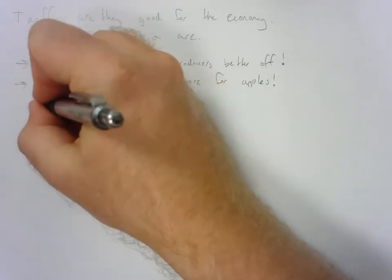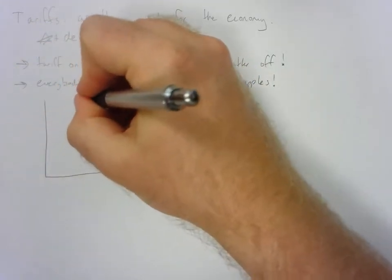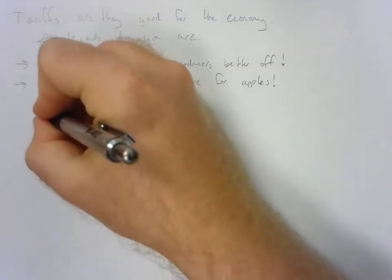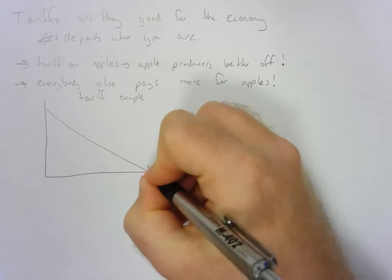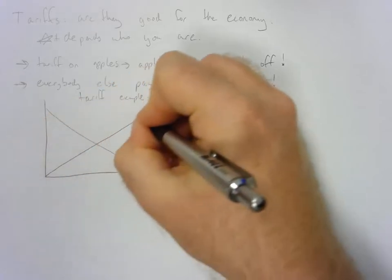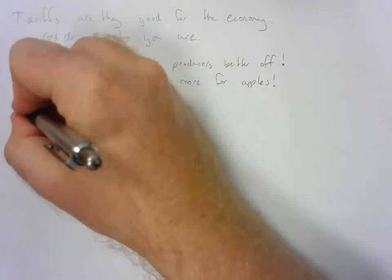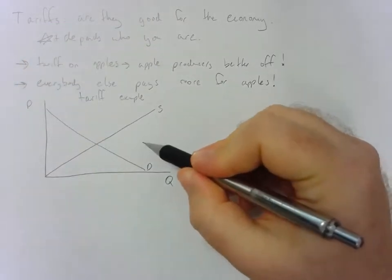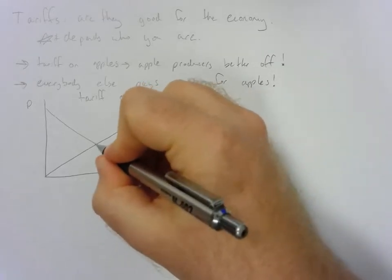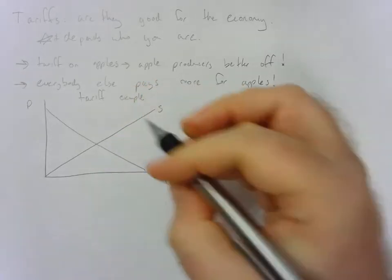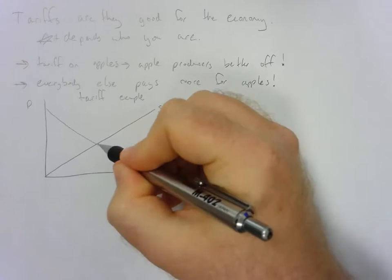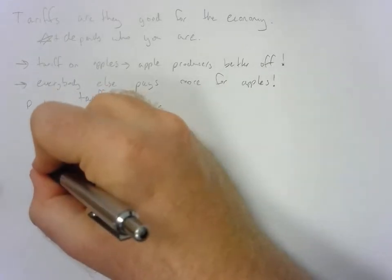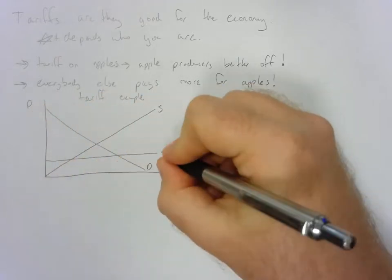In general, we consider a tariff to affect the international market. This might be an example of the market for apples in our domestic economy. If we're in autarky, which means no trade, we would have an equilibrium price and equilibrium quantity. Everything would be good. Now let's throw in the international supply of apples.